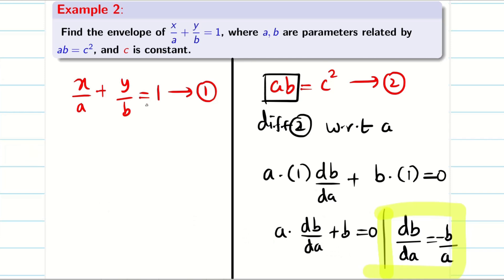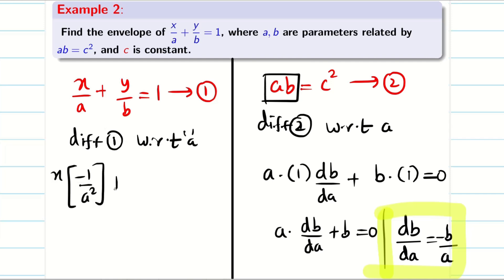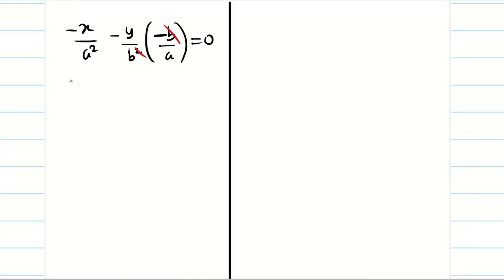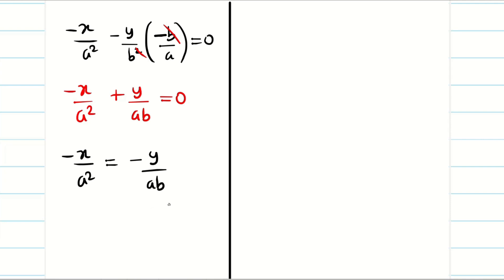We substitute this after differentiating equation 1 with respect to a. Differentiating x/a + y/b = 1 gives −x/a² + y · (−1/b²) · (db/da) = 0. Substituting db/da = −b/a gives −x/a² − y/b² · (−b/a) = 0. After cancellation, −x/a² + y/(ab) = 0, which simplifies to x/a = y/b.